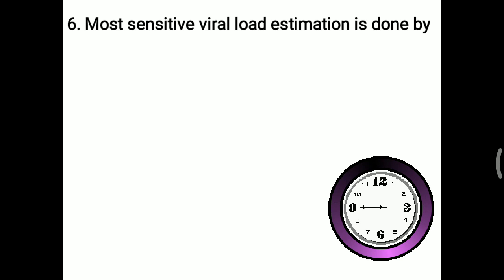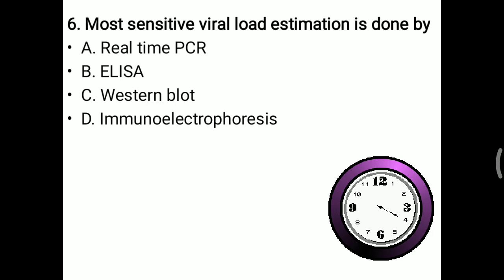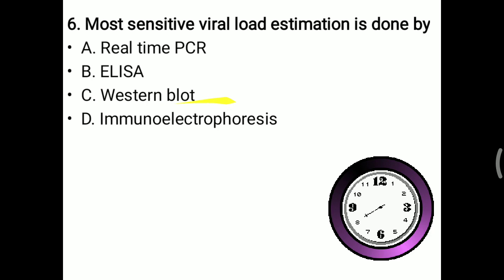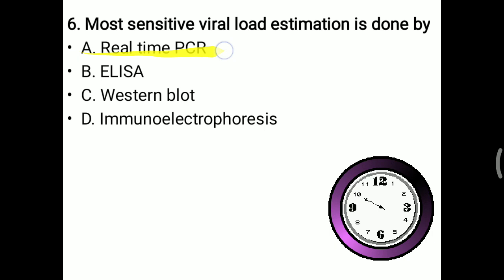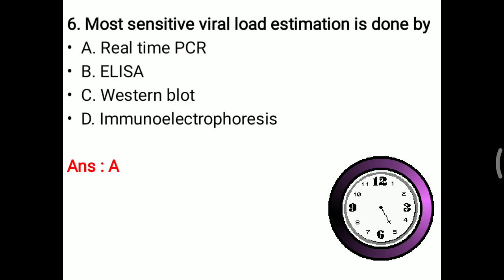Next MCQ: most sensitive viral load estimation is done by real-time PCR, ELISA, Western blot, or immunoelectrophoresis. Real-time PCR is also called qPCR or quantitative PCR. ELISA is for hormone estimation or antigen-antibody reactions. Southern blot detects DNA, Northern blot detects RNA, and Western blot detects protein — but viral load is mostly RNA and cannot be detected by Western blot. Immunoelectrophoresis is a separation method. Real-time PCR most sensitively detects viral load. The right answer is real-time PCR (qPCR).